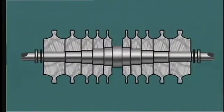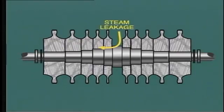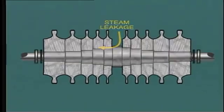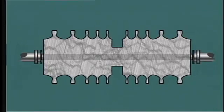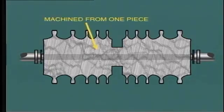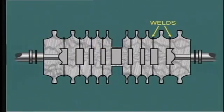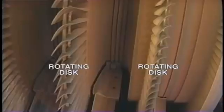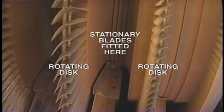In earlier machines, the discs are shrunk onto the rotor shaft. A problem with this type of construction is that in some cases, steam may leak along the shaft and cause distortion due to differential heating as well as a loss of efficiency. To overcome this problem, in modern turbines the discs and the shaft are forged in one piece and then machined. Yet another method of building up the rotor is by welding discs together, eliminating the shaft. In between each disc and associated blades, we have to fit the stationary blades.